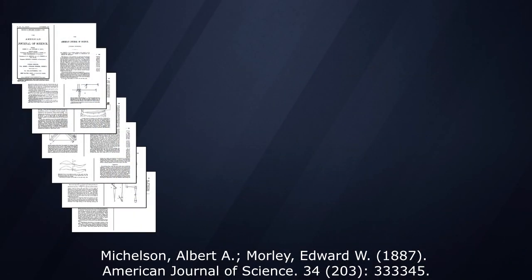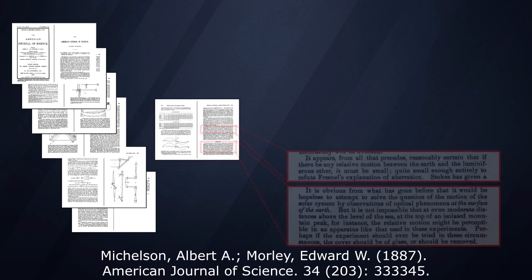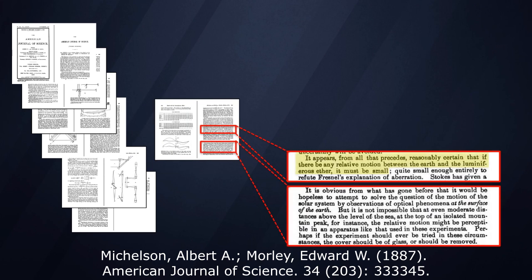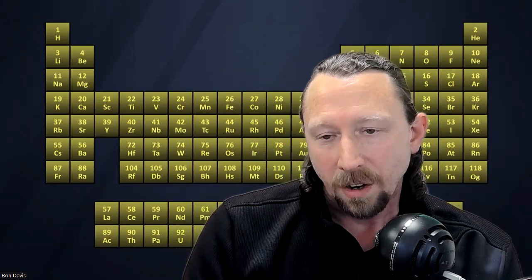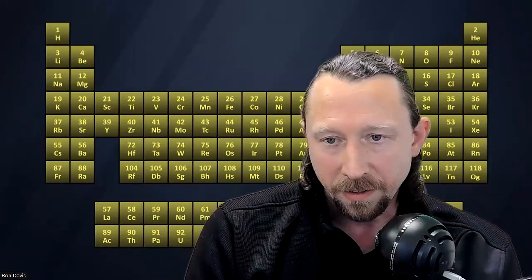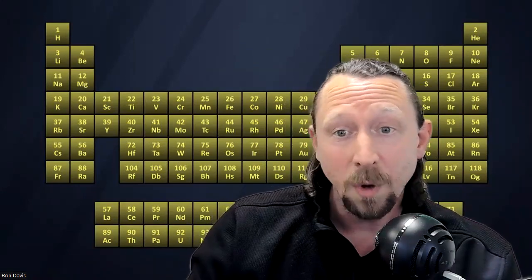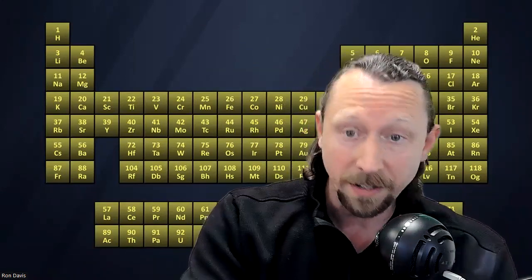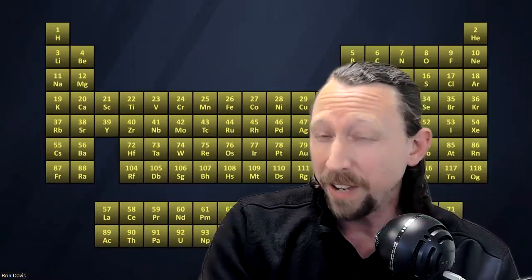I want to read just a few very, very short passages here for you. It appears from all that proceeds reasonably certain that if there be any relative motion between the earth and the luminiferous ether, it must be small, quite small. So what he's saying here is the earth and the luminiferous ether, if it exists, are moving in essentially the same direction at the same speed because we can't detect any motion through that ether. That doesn't mean it doesn't exist. It just is very unlikely, right, that we're moving at exactly the same rate and exactly the same direction as the luminiferous ether is.